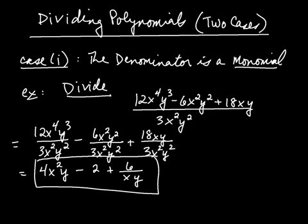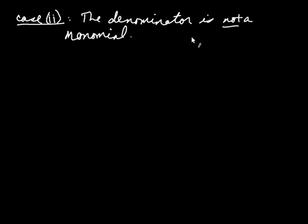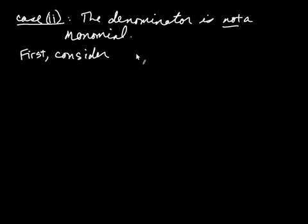What about the other case — case 2? Case 2 is when the denominator is not a monomial. I'd like you to consider something you already know how to do: long division. We're going to need this for what we talk about in a second.